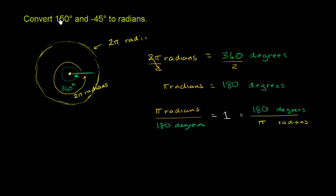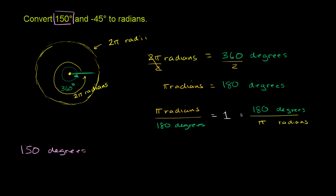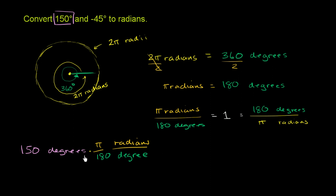So how do we convert 150 degrees to radians? We want to multiply by how many radians there are per degree. We know there are π over 180 radians per degree. So we multiply 150 degrees by π over 180 radians per degree. The degrees cancel out, and we're left with 150 times π divided by 180 radians.